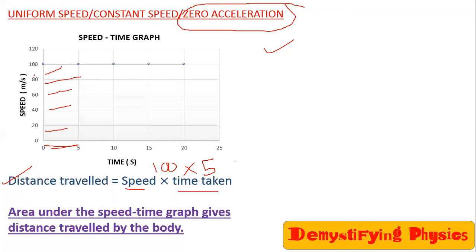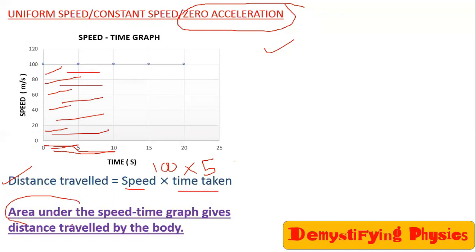If you are asked for the distance traveled in the first 10 seconds, you have 10 into 100, so you find this area. What you are actually doing is finding the area under the speed-time graph. The area under the speed-time graph gives you the distance traveled by the body.